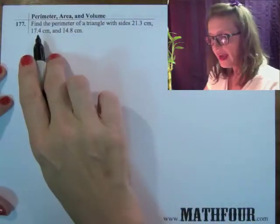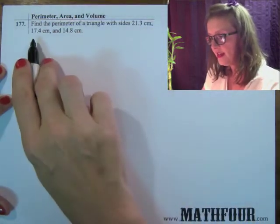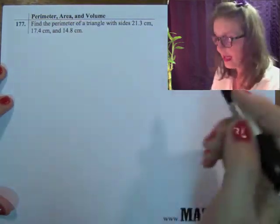In this question, we're asked to find the perimeter of a triangle with sides 21.3 centimeters, 17.4 centimeters, and 14.8 centimeters.